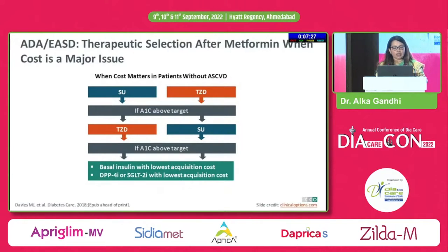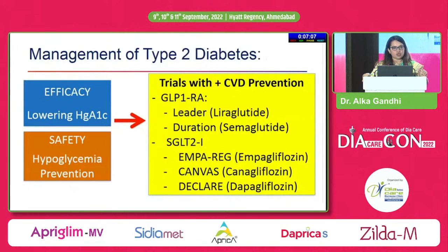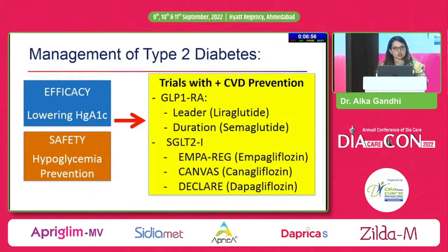When managing type 2 diabetes, our priorities are clear: efficacy in lowering A1C, safety through hypoglycemia prevention, and if we have CVD prevention, even better. Trials with CVD prevention include GLP-1 receptor agonist trials like LEADER and SUSTAIN with liraglutide and semaglutide, and SGLT2 inhibitor trials like EMPA-REG with empagliflozin, CANVAS with canagliflozin and DECLARE with dapagliflozin.